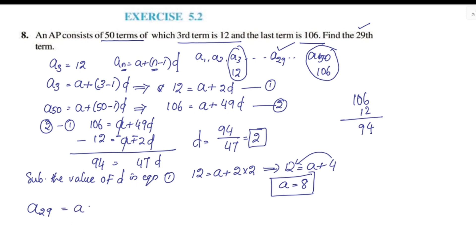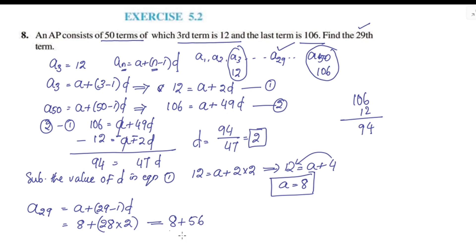A29 equals a plus 29 minus 1 into d, equals 8 plus 28 into 2. 28 multiplied by 2 is 56, and 56 plus 8 is 64. So the 29th term is equal to 64.